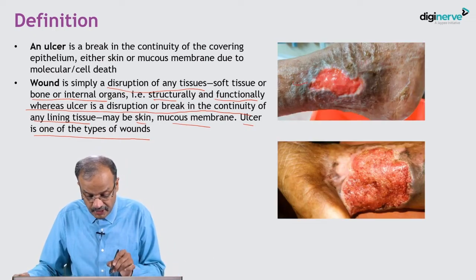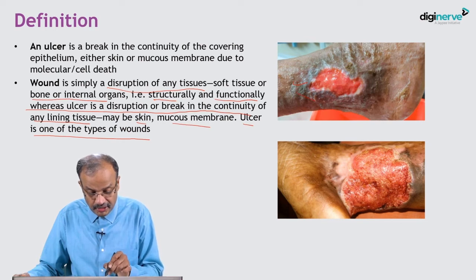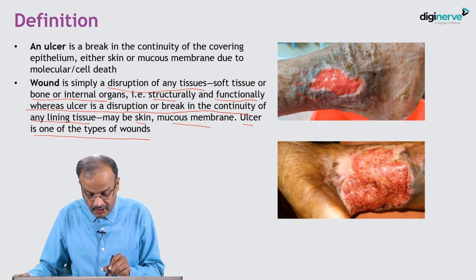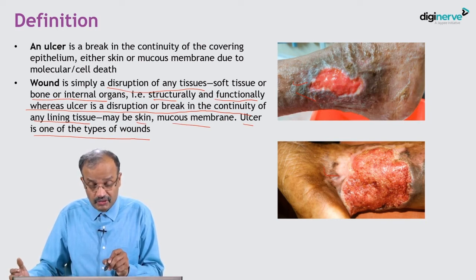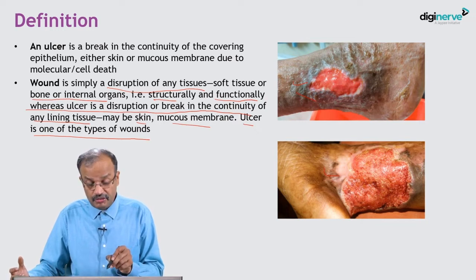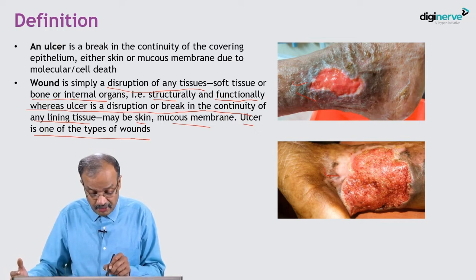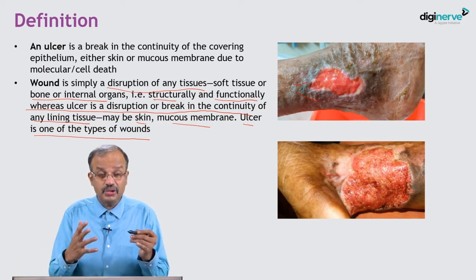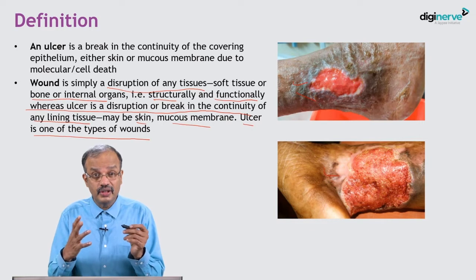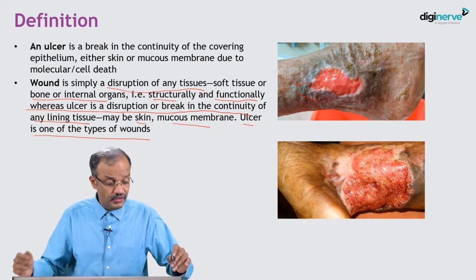You can see an ulcer here - this is a healing ulcer. You can see the granulation tissue, the margin, and the scar. Actually, it is a malignant ulcer, a marginal ulcer - in an existing unstable scar the patient had earlier, which turned into malignancy because of repeated breakdown and long duration. We will describe it and go through different types to get the exact picture of an ulcer.